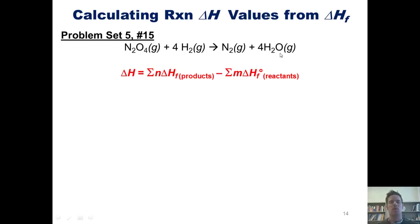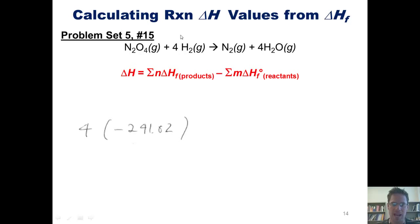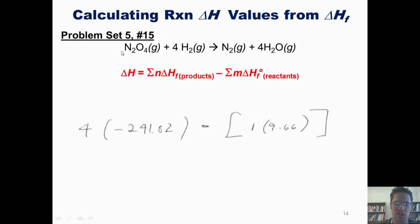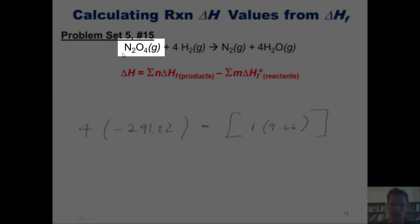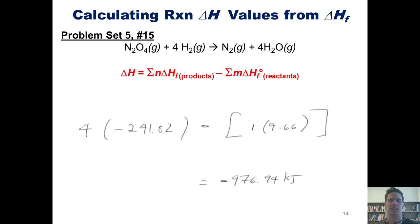I now throw everything into the equation, starting with the enthalpies of formation of my products. Gaseous water has a value of negative 241.82, multiplied by 4 because there is a 4 coefficient in front of H2O in the balanced equation. I subtract the enthalpies of formation of my reactants: H2 is zero, and N2O4 is positive 9.66, multiplied by 1. Subtracting the combined reactant enthalpies from the combined product enthalpies gives a final answer of negative 976.94 kJ — the same as the long way.